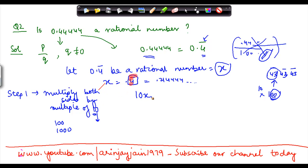So what do we get is 10x is equal to 4.4444 and so on. Now this can also be written as 10x is equal to 4 plus 0.4444, right? I've just broken down this as 4 plus this number.